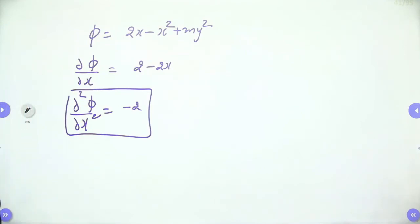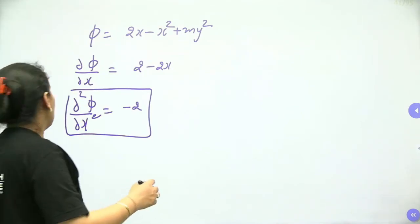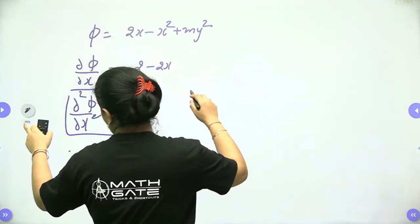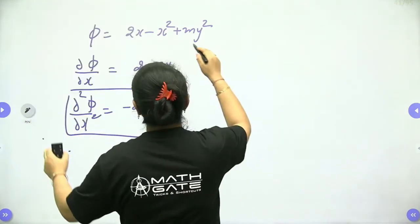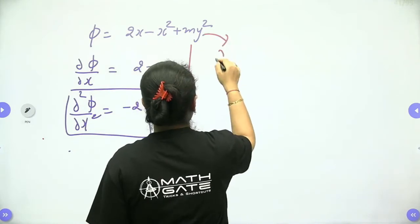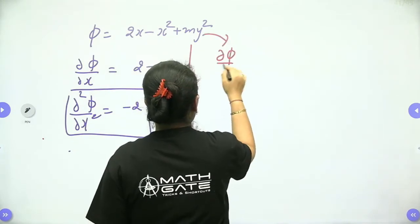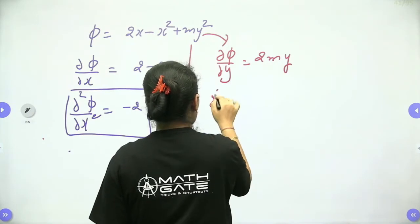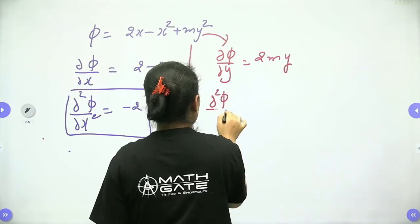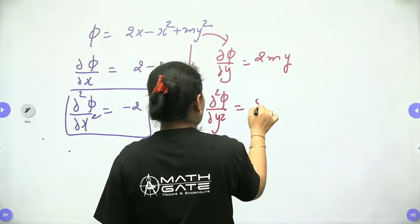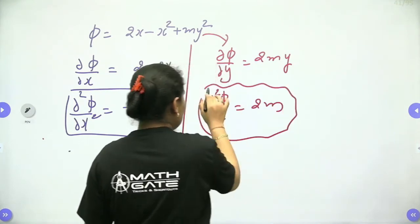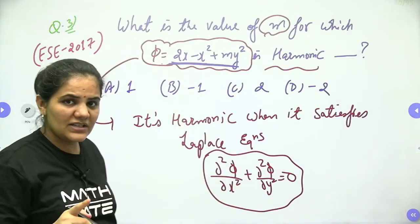Next, the partial derivative with respect to y: ∂φ/∂y equals 2my. The second derivative: ∂²φ/∂y² equals 2m.